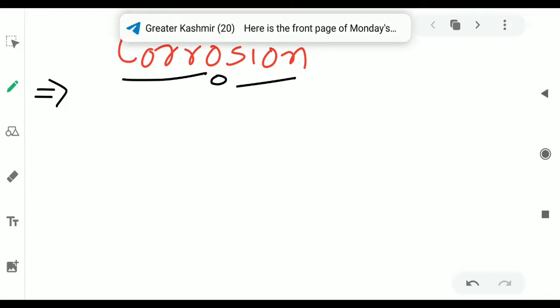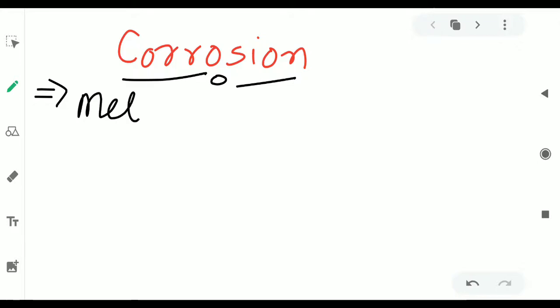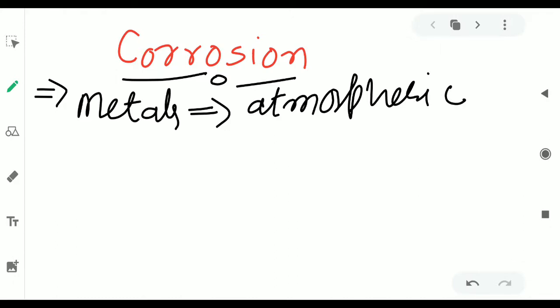First, let's start with corrosion. We have metals. These metals are usually reactive in nature. These react with our atmosphere. Atmosphere has been reactive. Atmosphere is a chemical and gases.